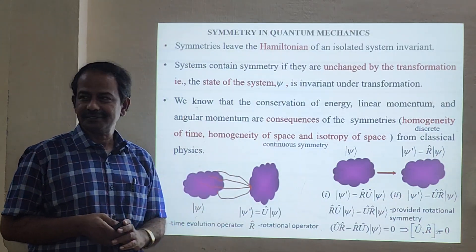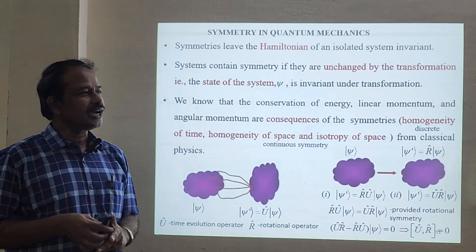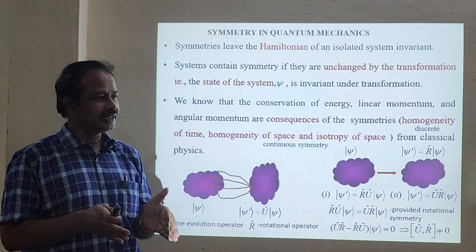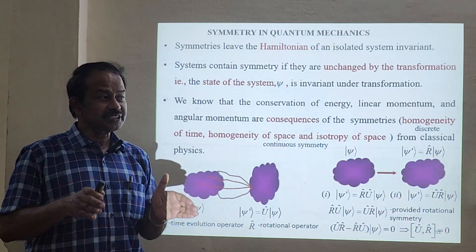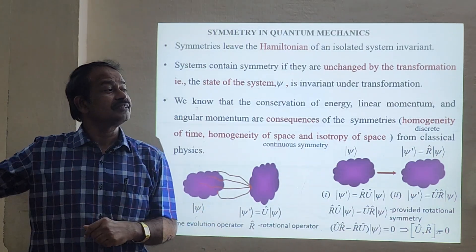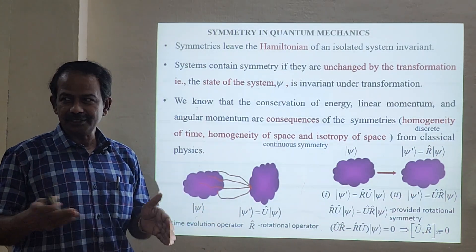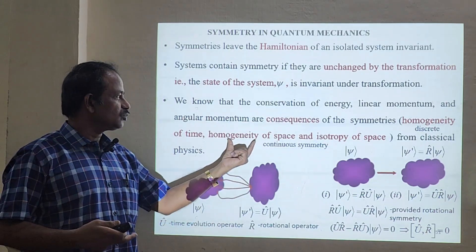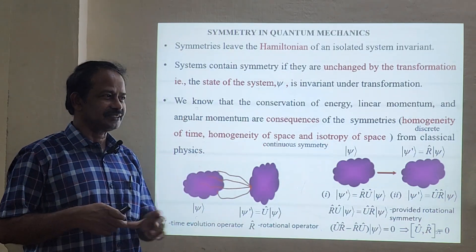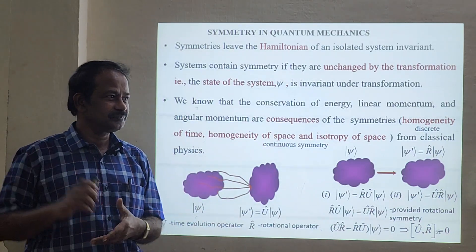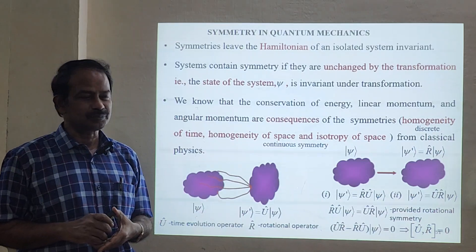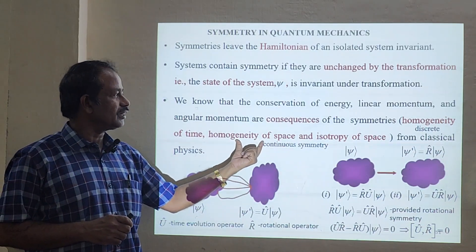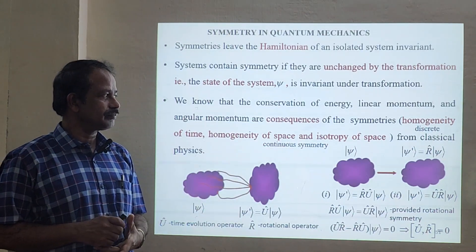Now, homogeneity of space: if I measure some quantity here and then measure the same thing somewhere outside — outside the room, changing the place — I will get the same result. This is called homogeneity of space, also referred to as a translation or translational motion.